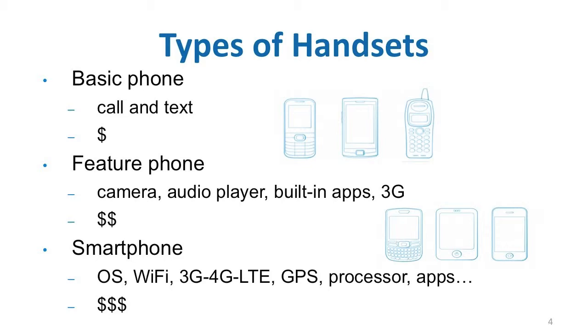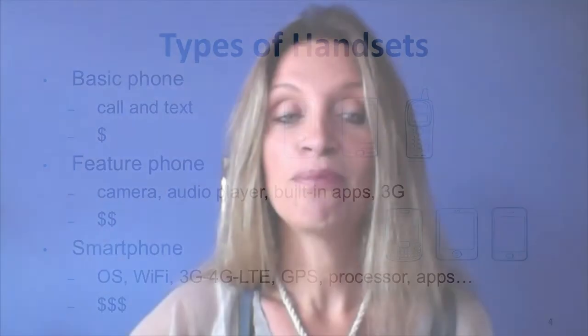Smartphones offer high-end computer-like features and options, but they are not cheap. A smartphone typically runs on a mobile operating system, which provides APIs that allow third-party apps to execute. The smartphone also includes internet connectivity via Wi-Fi and 3G or 4G LTE, a processor, a high-resolution camera, voice recorder, built-in GPS, and a capability to run various downloadable apps and many other features, some of which we are going to discuss in the following slides.